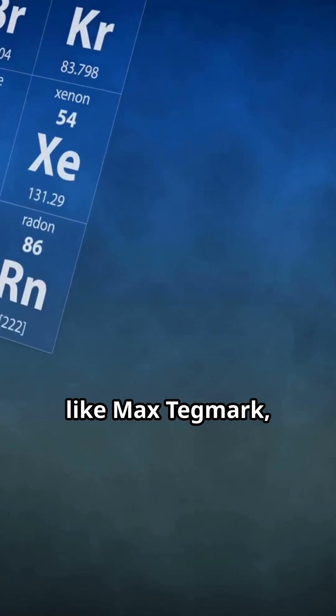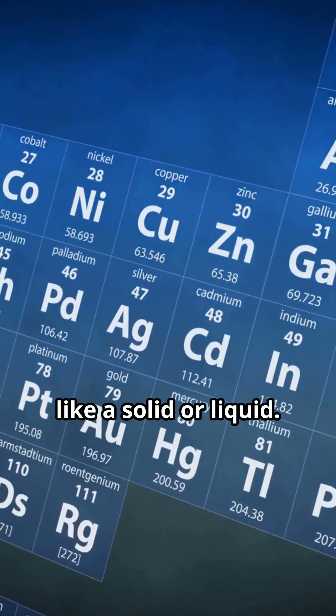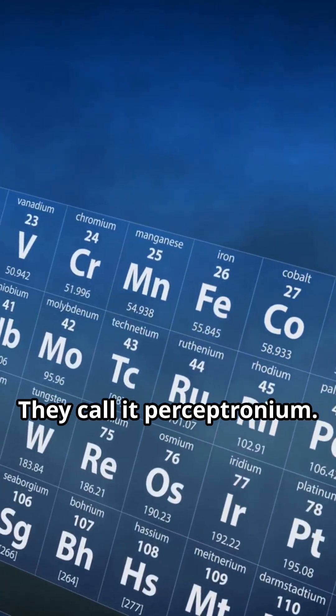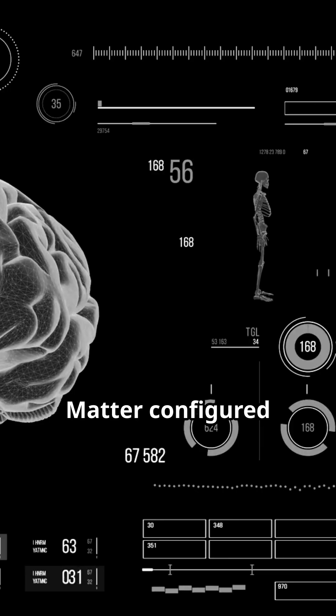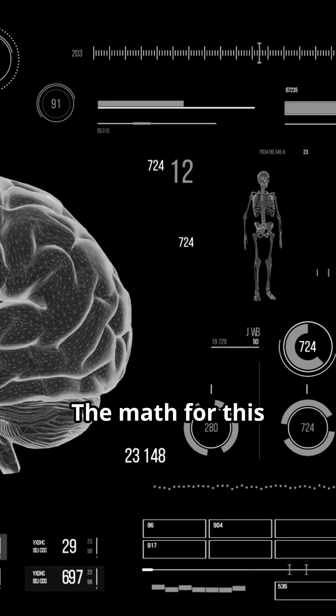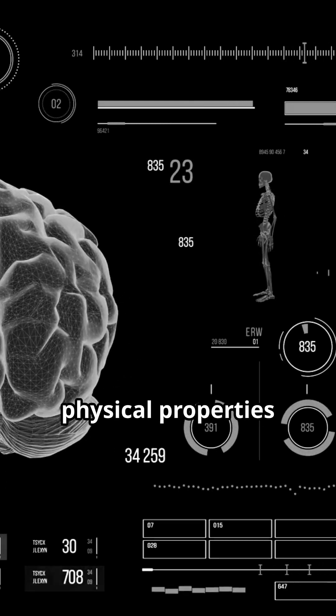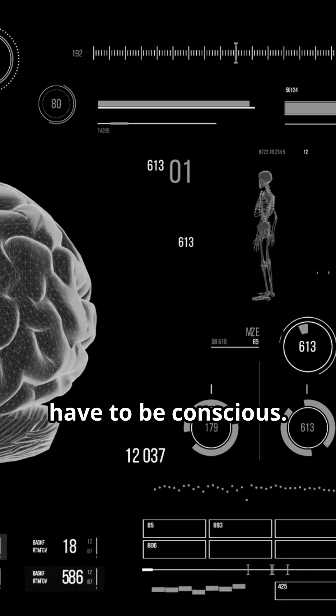Some physicists like Max Tegmark suggest consciousness might be a state of matter like a solid or liquid. They call it perceptronium, matter configured to process information in an integrated way. The math for this comes from quantum mechanics and information theory, asking what physical properties a system needs to have to be conscious.